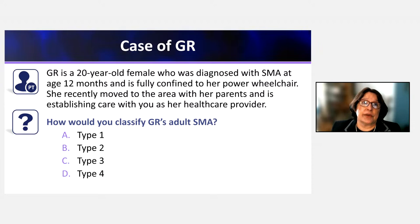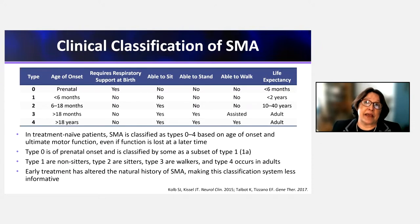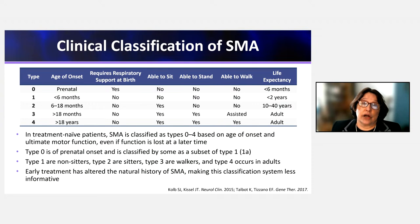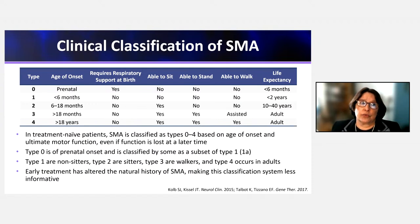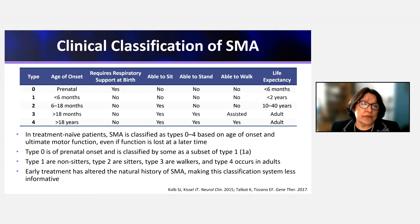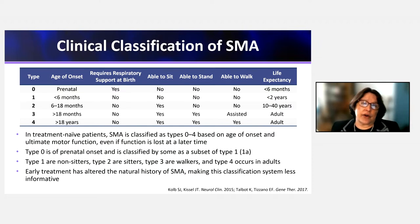Reviewing the clinical classification: GR is in a wheelchair, and the age of presentation at 12 months — which falls between 6 and 18 months — indicates SMA type 2. Musculoskeletal deformities such as scoliosis, contractures, and hip dysplasia are major issues for type 2 patients over time, as they are not bearing weight and are constantly sitting, which becomes more pronounced as they age and transitioning becomes harder.